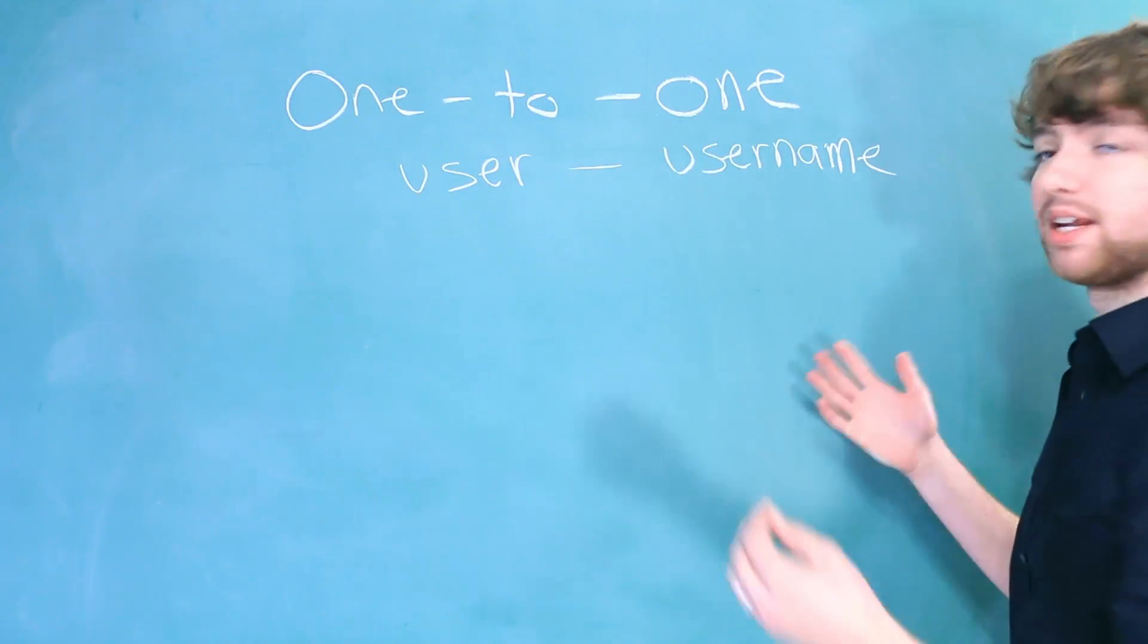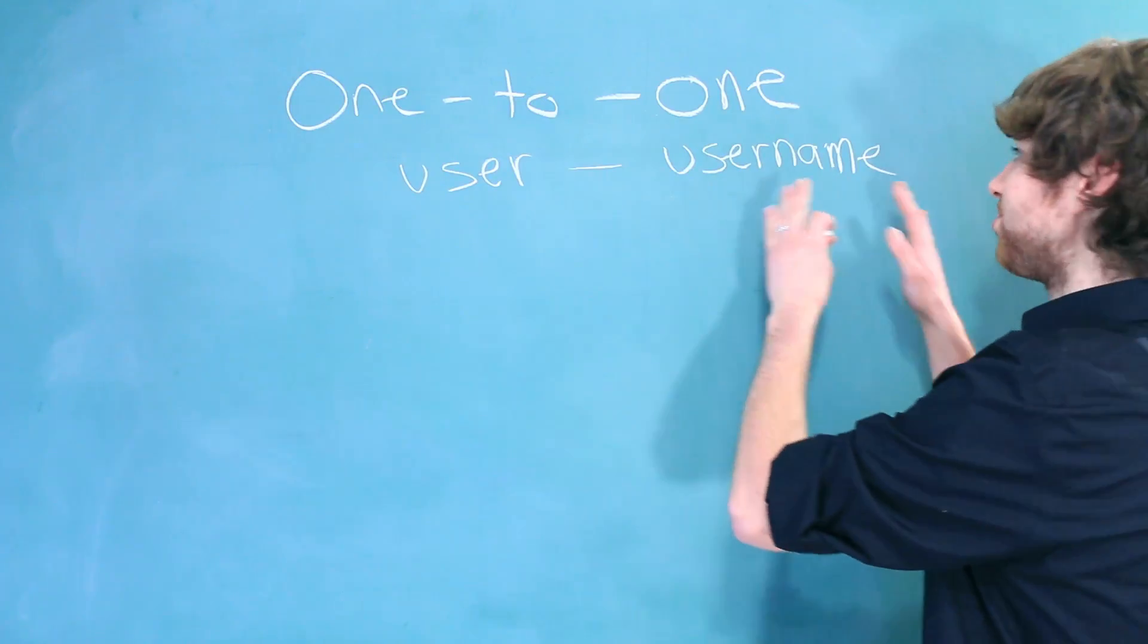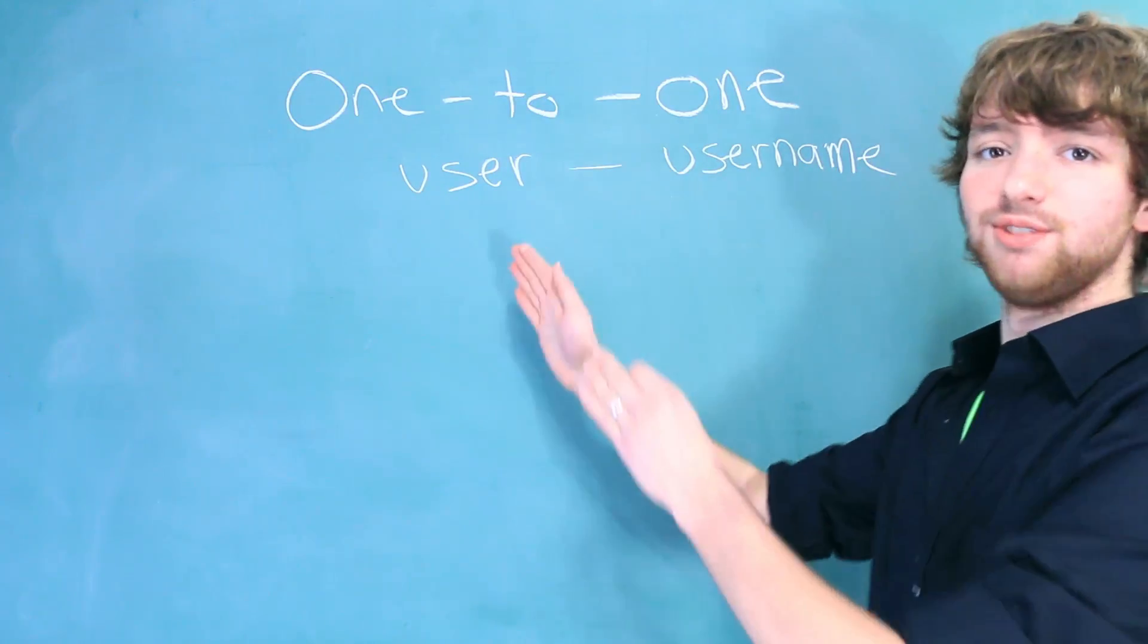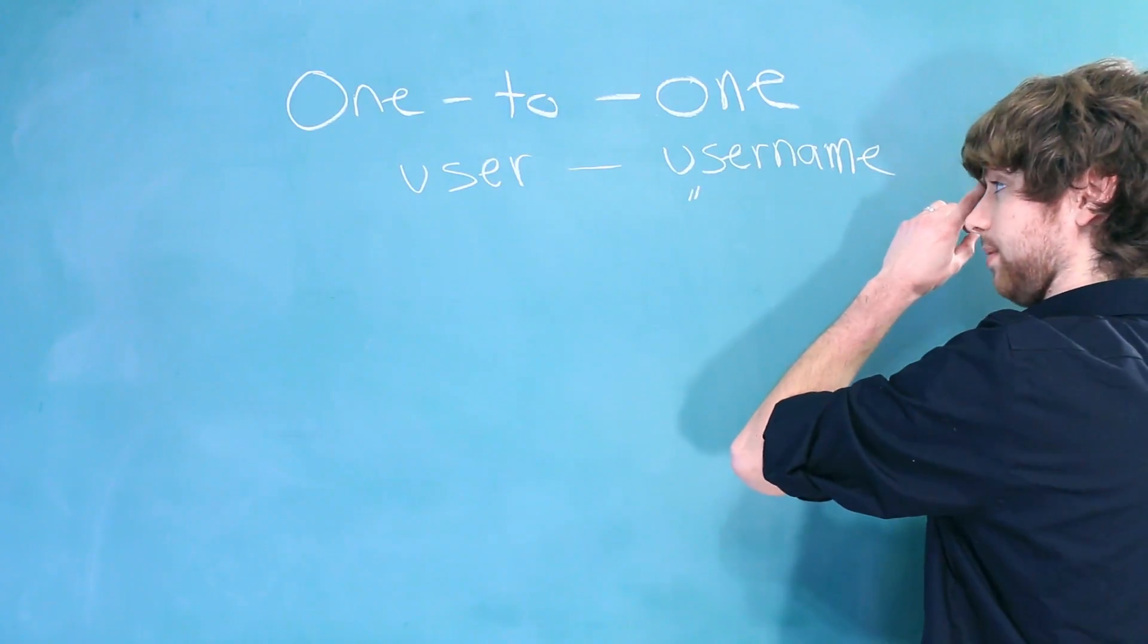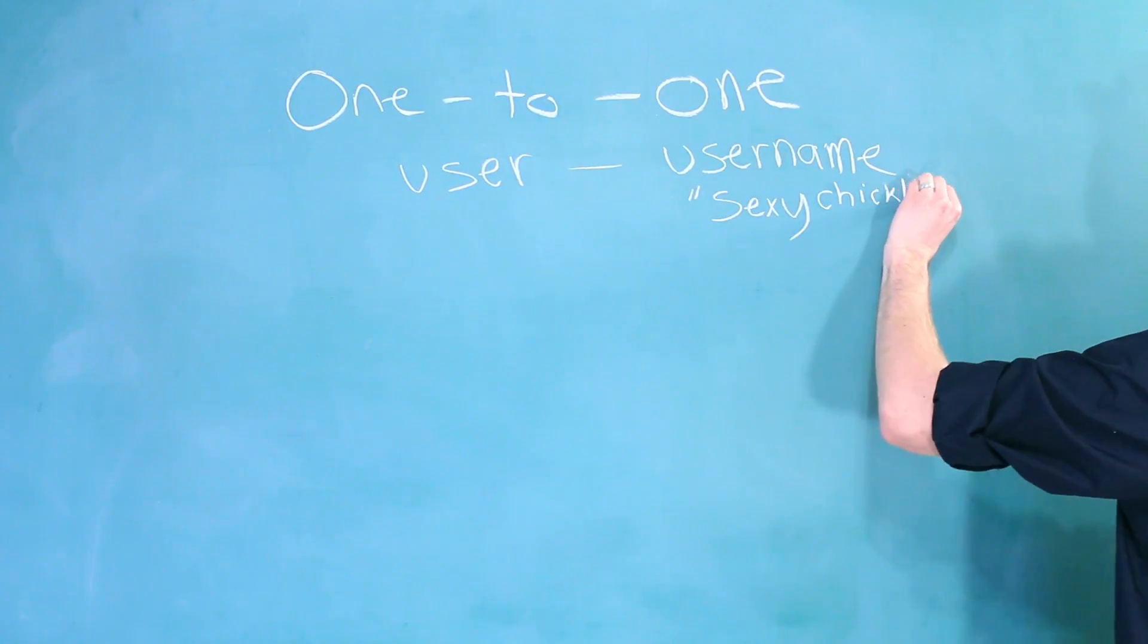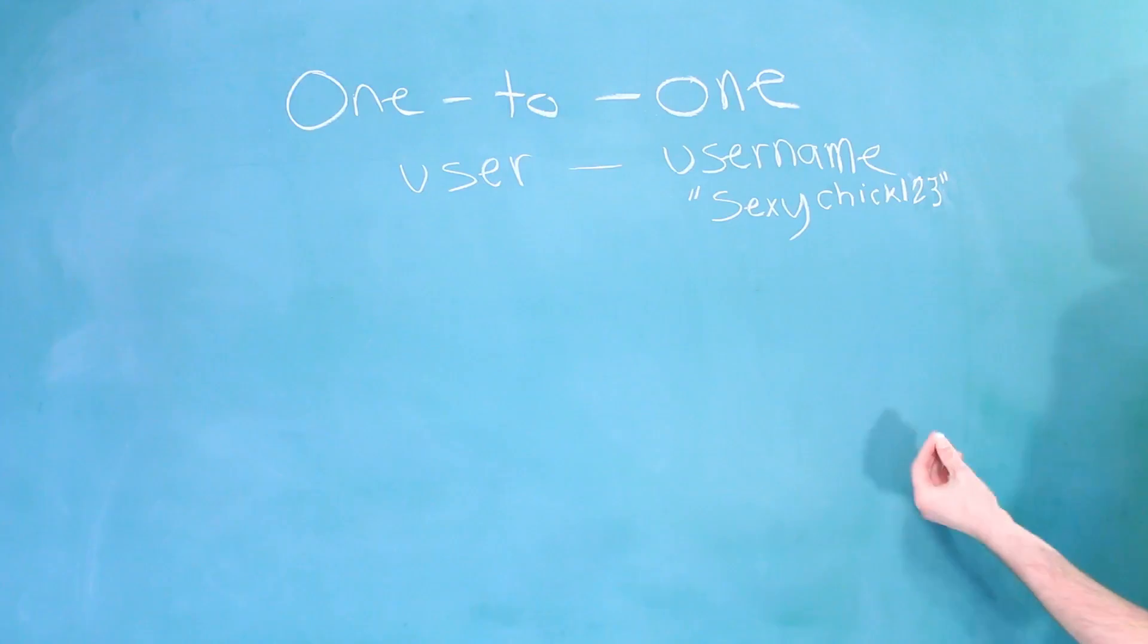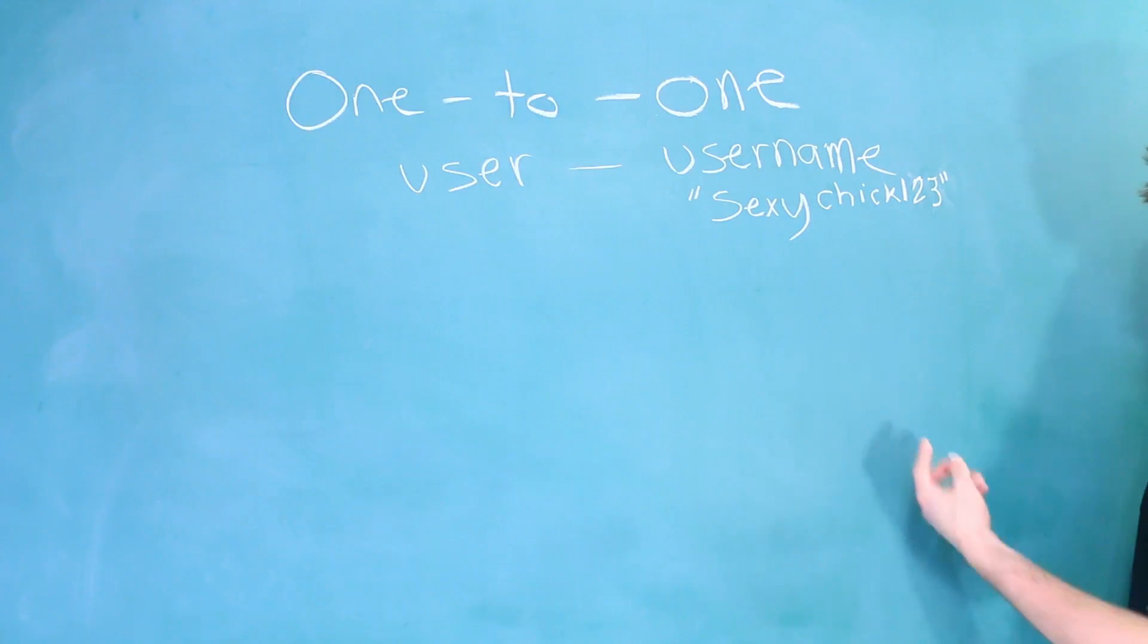Now, this is talking about database design relationships. The username is exclusive to the user, meaning that if your username is sexychick123, get it because it's an animal dating site, chick.